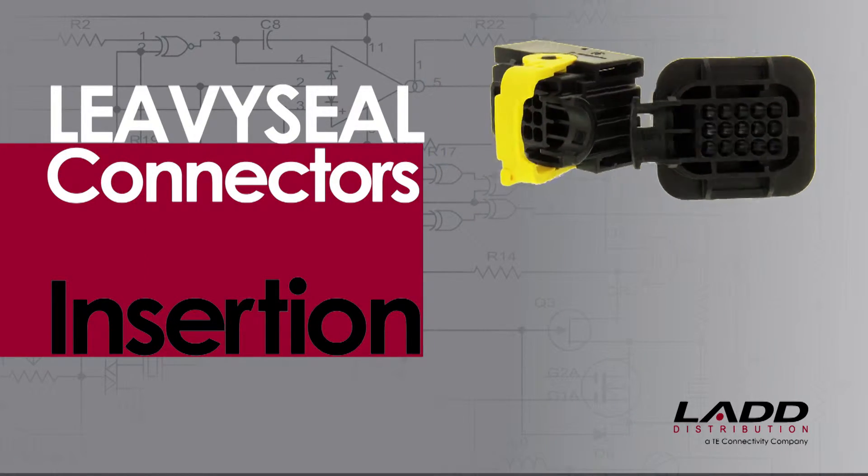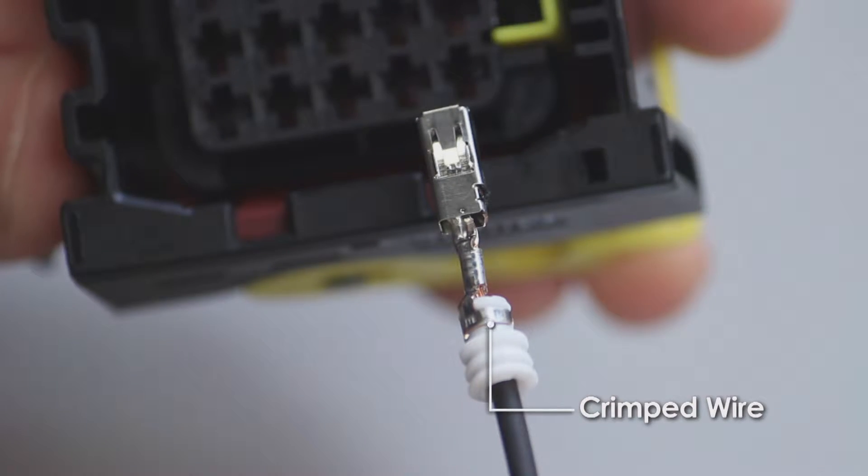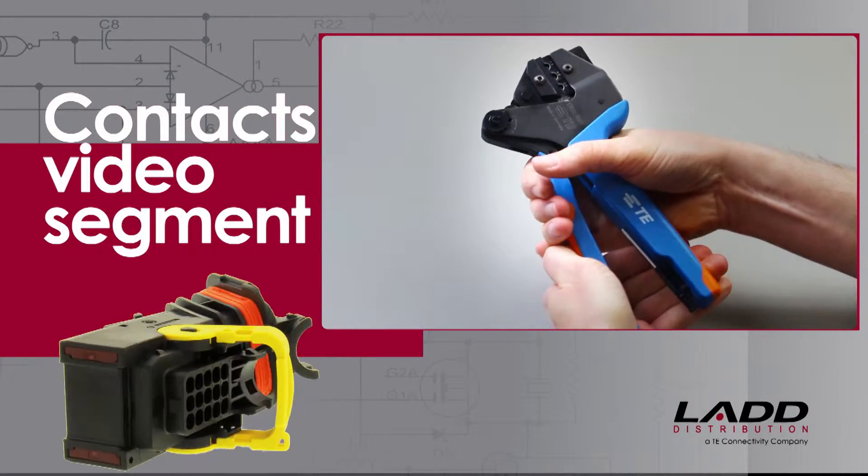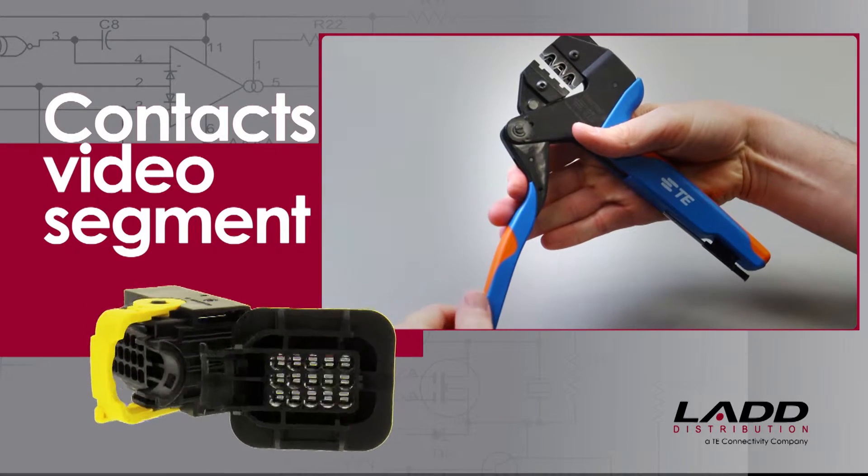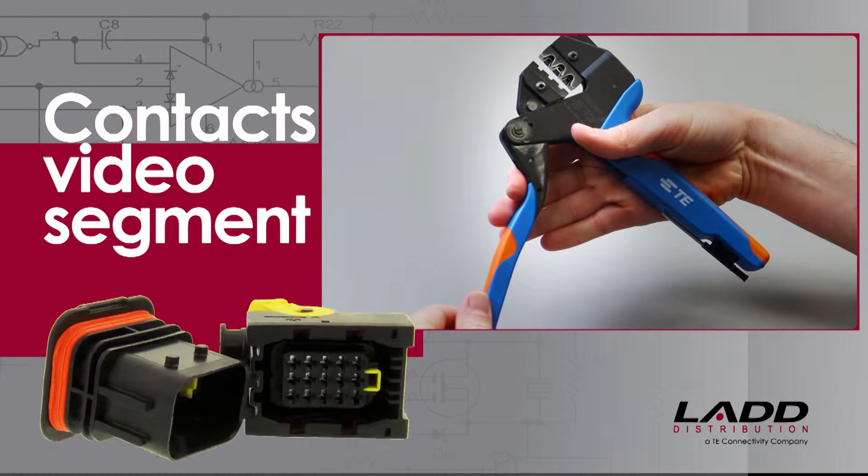Levee Seal Contact Insertion. Begin with a crimped wire. For assistance, refer to the AMP MCP Contacts video segment for detailed instructions.